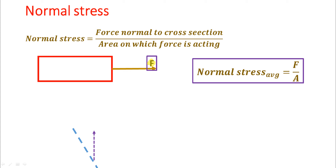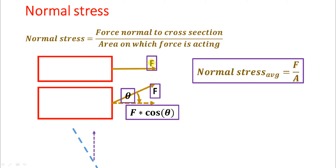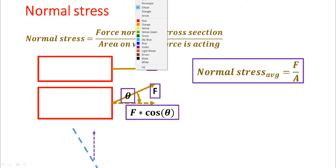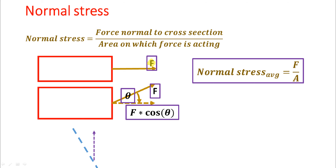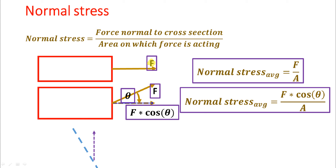Now let's add more complexity by applying a force which is inclined to some surface. If F is acting at an angle theta to the horizontal, the horizontal component will be F cos theta. The area perpendicular to F cos theta is still A. So our average normal stress will be F cos theta divided by A.